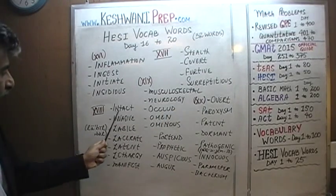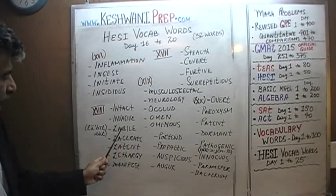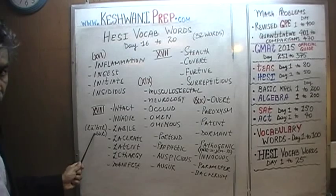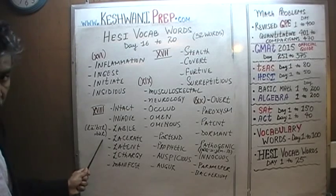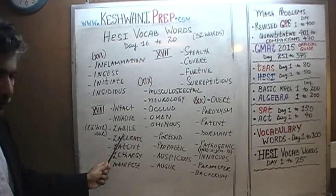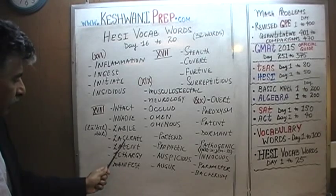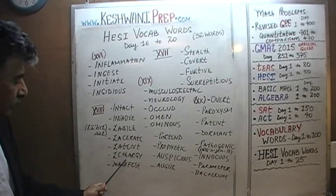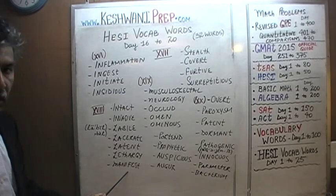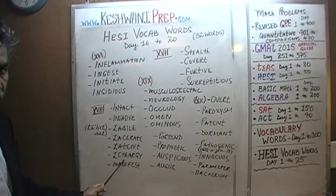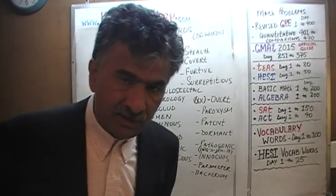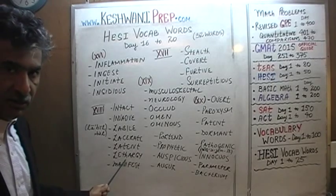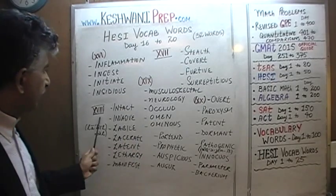Day number 18, we have intact, invasive. This word here has two acceptable pronunciations — it can be pronounced as labile or label. Again, the whole idea is to learn the word if you do not understand the meaning. Lacerate, latent, lethargy, and manifest. Lethargy here is a noun — it's a tricky word. It's pronounced lethargy as a noun; as an adjective, it is lethargic. Lethargic and lethargy.